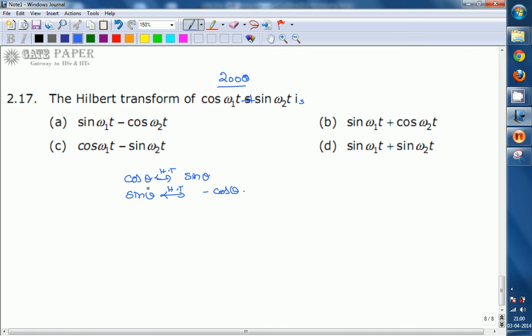These are the Hilbert transform relations. If you apply the same Hilbert transform rules for the above equation, then the cos ω₁t Hilbert transform is sin ω₁t.